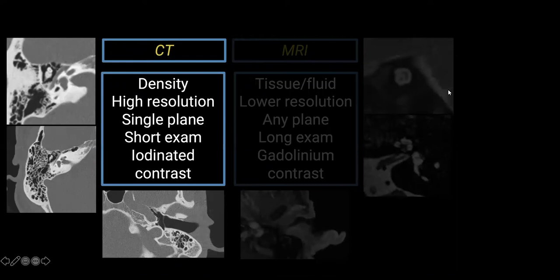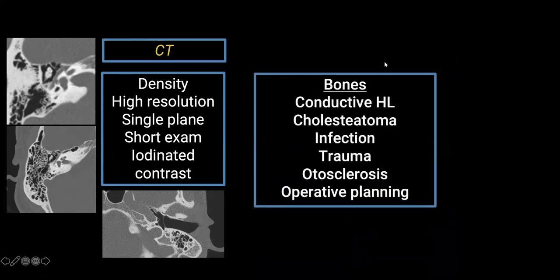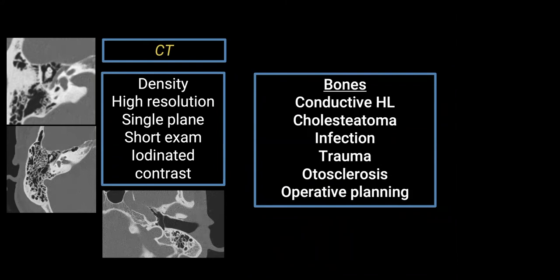Before we get into all the details about MRI, I want to briefly touch on CT and what some of the clinical things are that we use it for. CT is great for bones — very high resolution. It's a density-measuring machine, so you have very high-density bones versus the middle ear mastoid next to very low-density air, giving you great resolution between those structures.